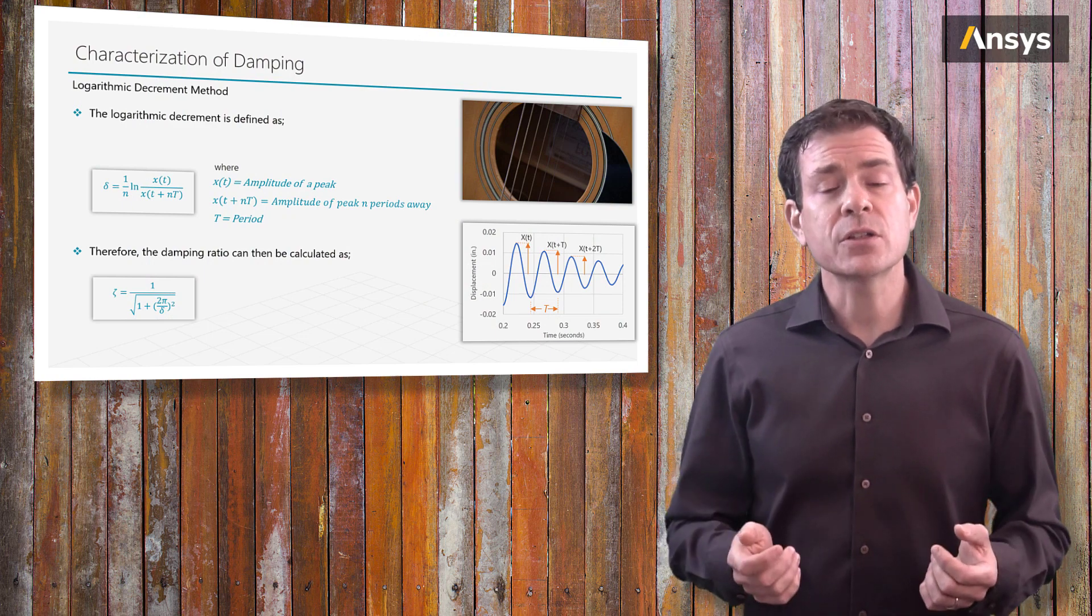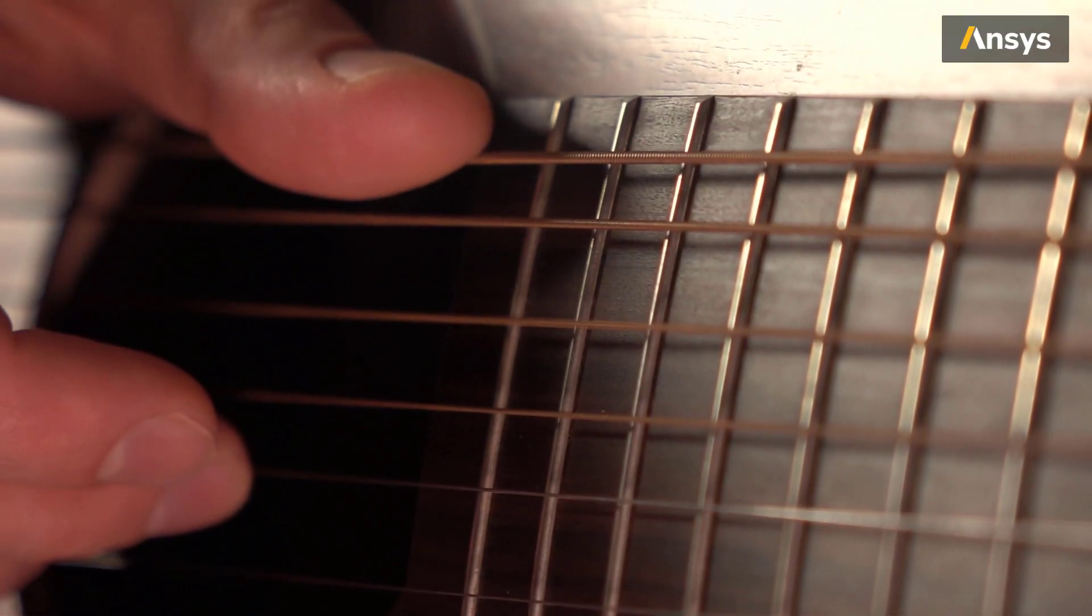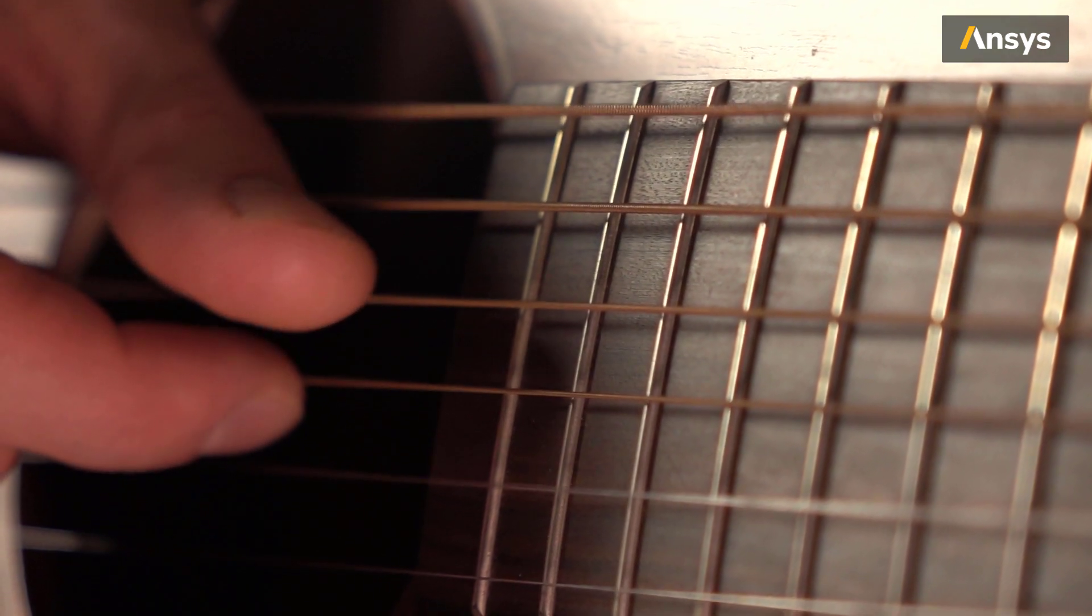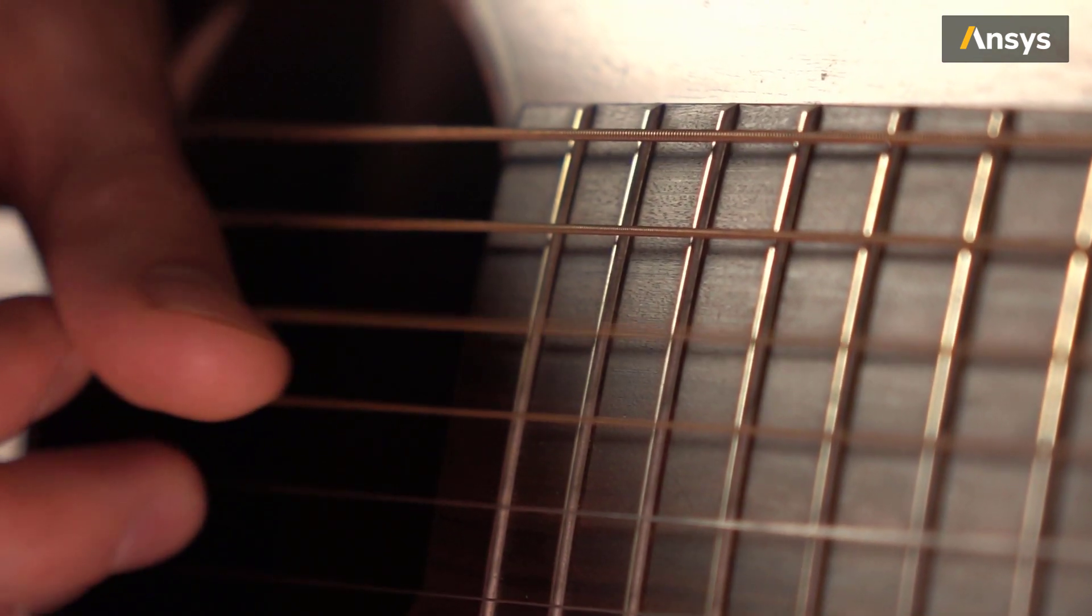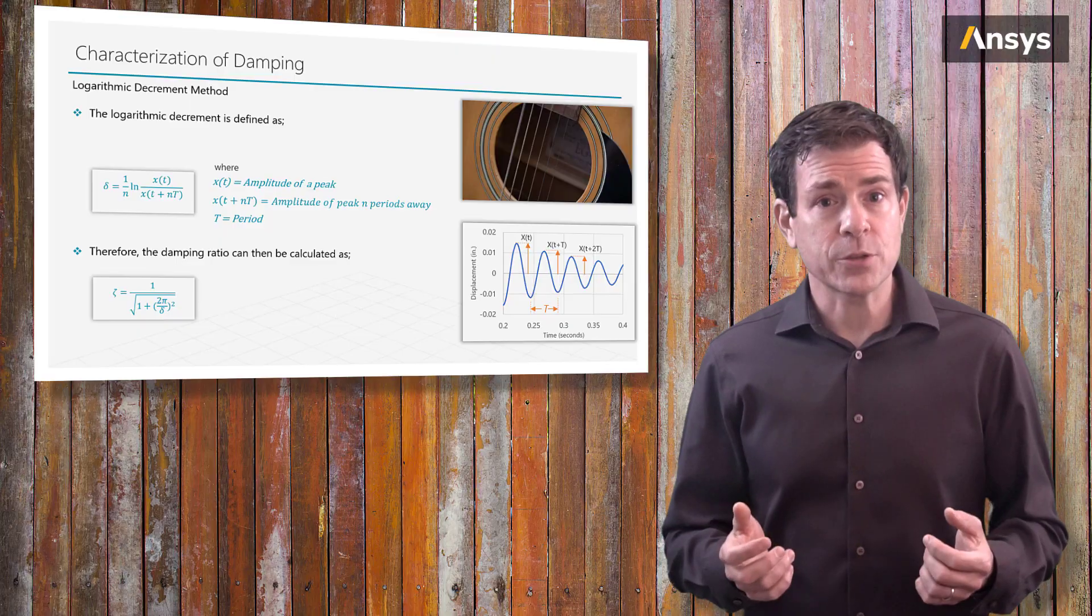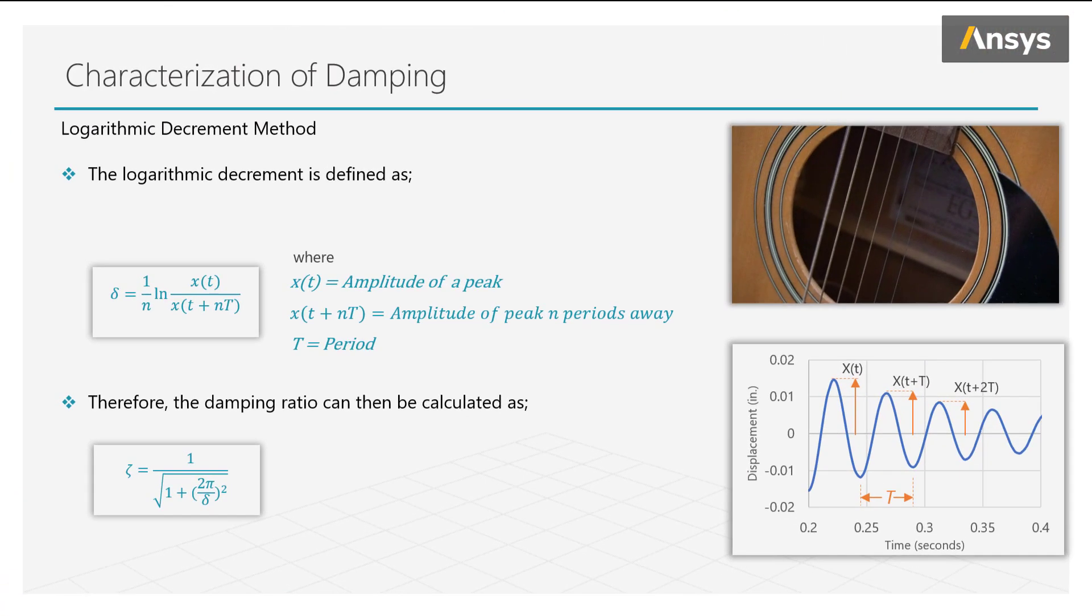Let's again use this guitar string as an example. We pluck the string, and we clearly see and hear the decay in the vibration. Then using optical measurements, we can trace the string's displacement over time.